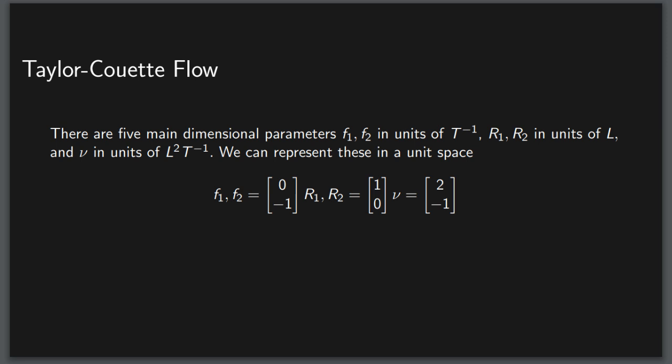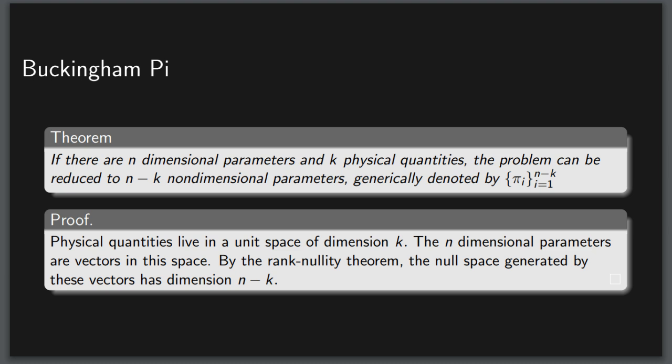A famous result about these quantities is the Buckingham Pi theorem, which states that if you have n-dimensional parameters and k physical quantities, you can produce n minus k non-dimensional parameters, called pi's, which describe the problem. The proof of this boils down to a version of the Rank-Nullity theorem of linear algebra fame. In short, the pi's span a null space whose dimension is measured as n minus k.